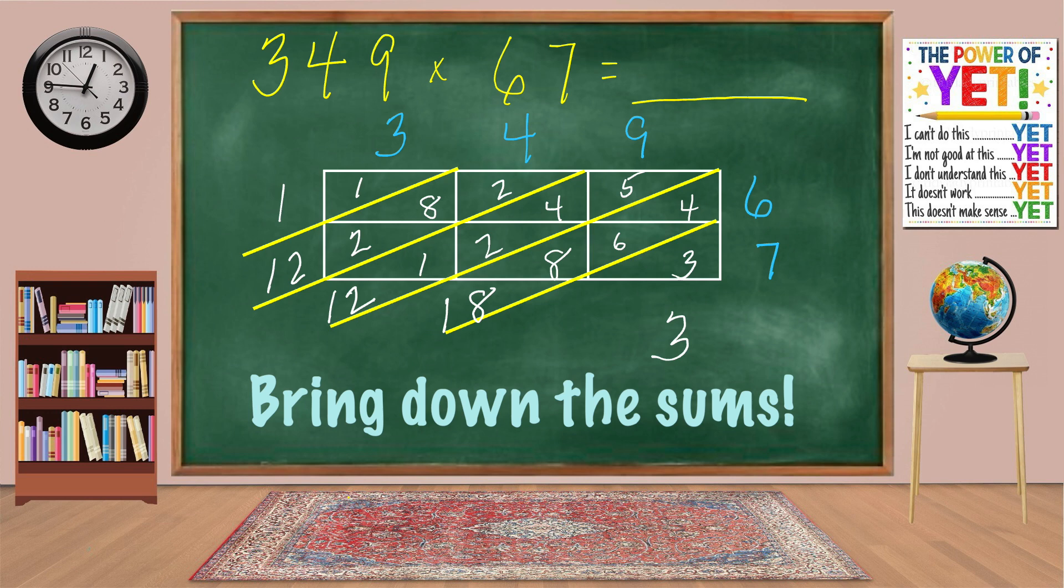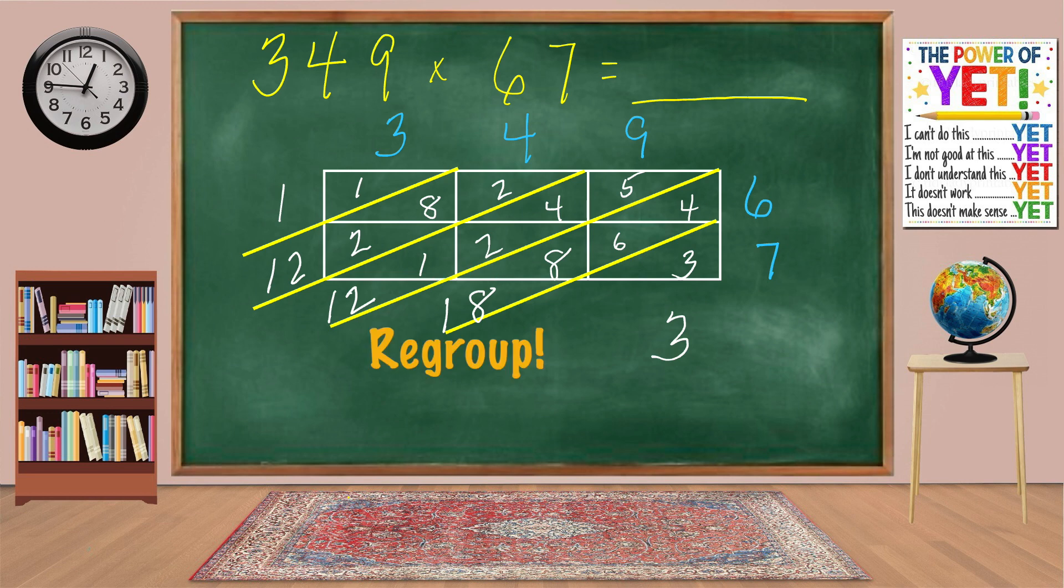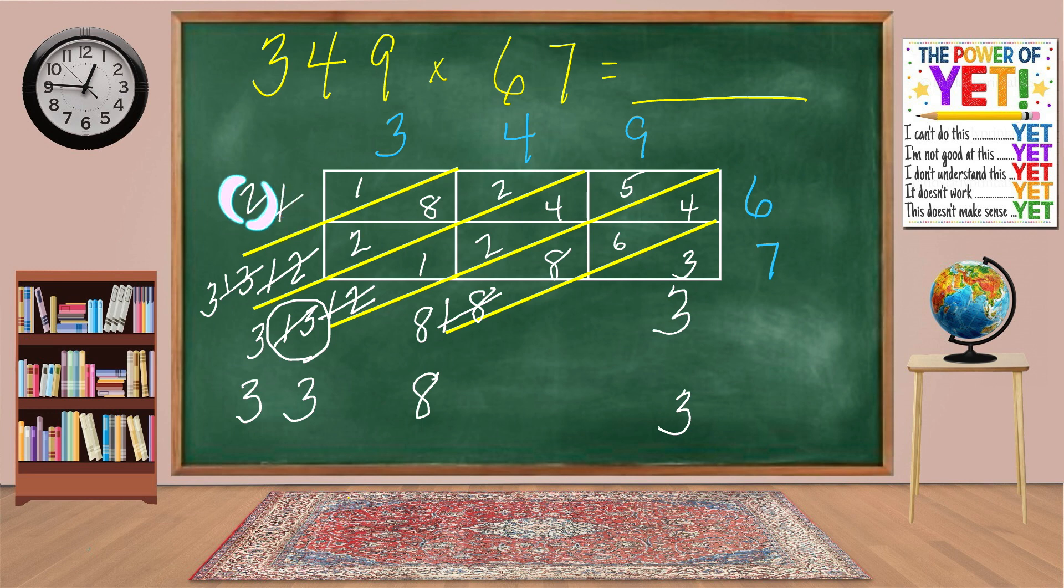Ready to bring down the sums? 3. 18 is a two-digit number, so we need to regroup. Regroup the 1. 12 becomes 13. Bring down the 8. 13 is a two-digit number. Regroup the 1. 12 becomes 13. Bring down the 3. Same as above. 13, 3. Regroup. 1 becomes 2. And finally, 2.